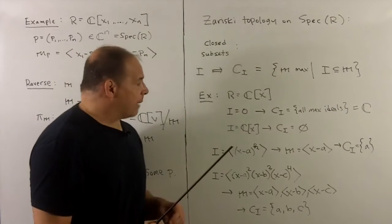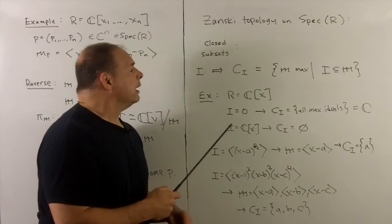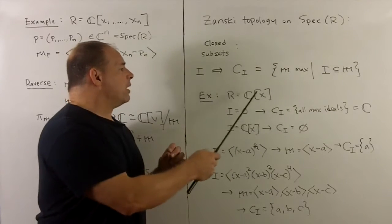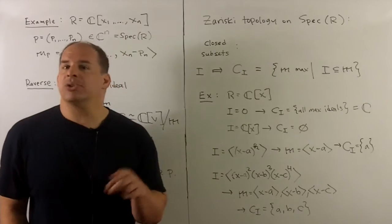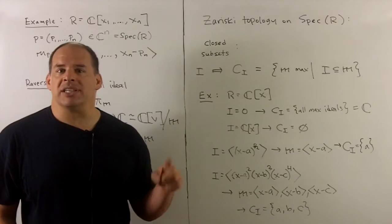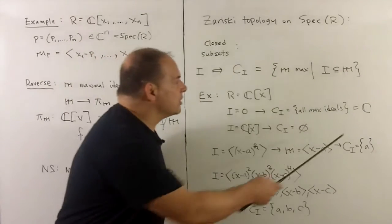Some examples, or example we saw before. So let's take polynomials in one variable. If I let the ideal be equal to zero, well, zero is contained in every maximal ideal. So I just get the entire space back. So that's just going to be all of C.